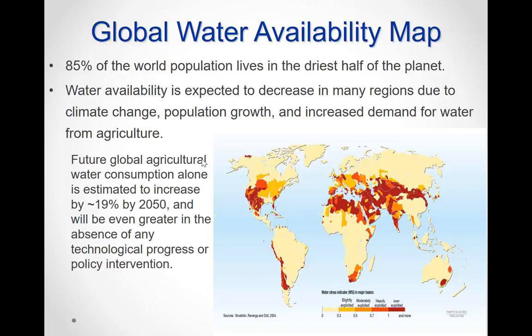Water availability is expected to decrease in many regions due to climate change, population growth, and increased demand for water from agriculture. Future global agriculture water consumption alone is estimated to increase by about 19 percent by 2050, and be even greater in the absence of any technological progress or policy intervention.